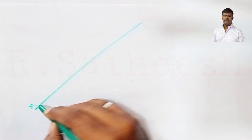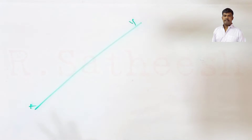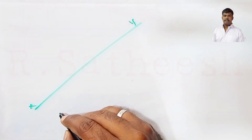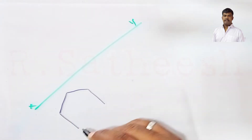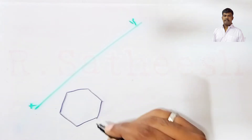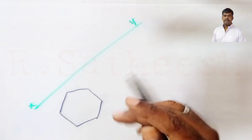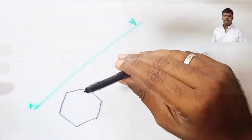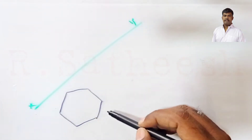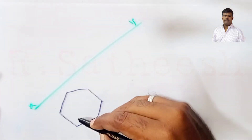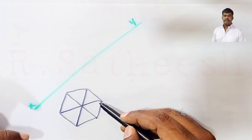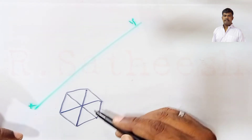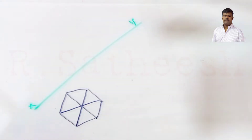First we draw one XY reference line. Our solid is hexagonal, so first draw the hexagon as per the given size — 25 mm side and height 50 mm. This is a pyramid resting on HP. In the top view, the base hexagon is visible and all the slant edges are also visible, so all slant edges are made dark with H pencil.